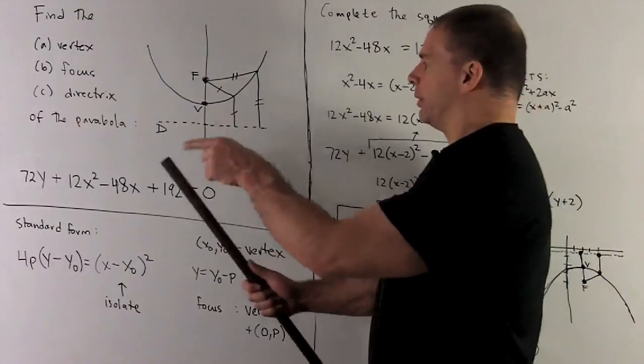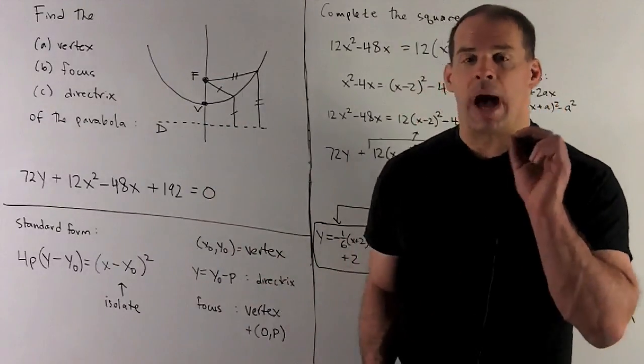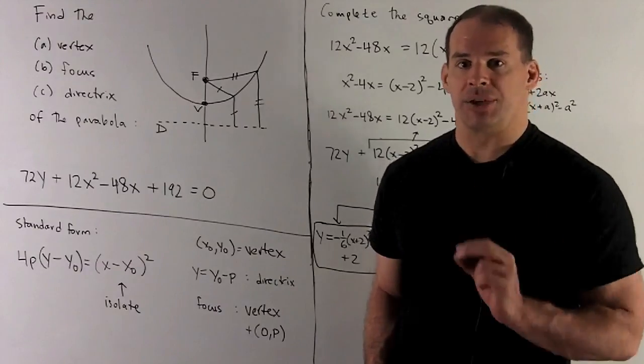If we were doing this with the bowl going like that, or like that, so that would be with Y squared, then we would be adding (P, 0).